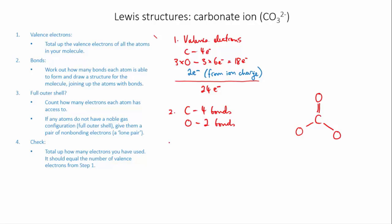So let's go on and look at the full outer shell. So carbon has four bonds which means it has access to eight electrons, so it's fine. The oxygen at the top has access to four bonding electrons because it's got two bonds, so it needs an extra four electrons, so I'm going to give it two lone pairs. So it now has four bonding and four non-bonding electrons, so it's happy.